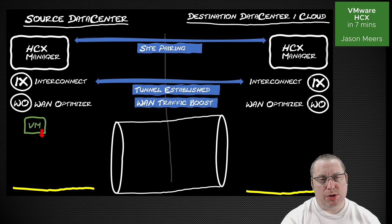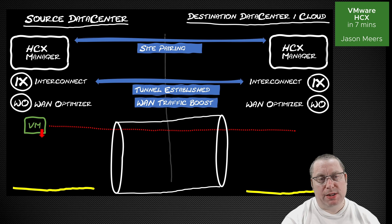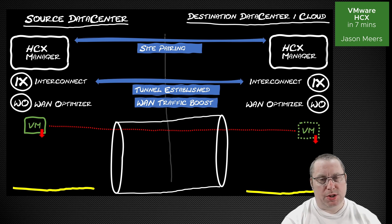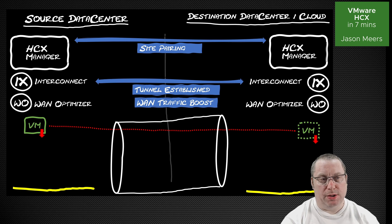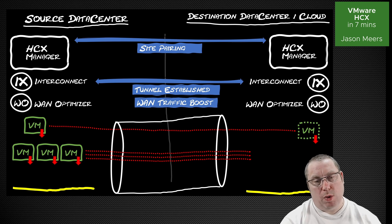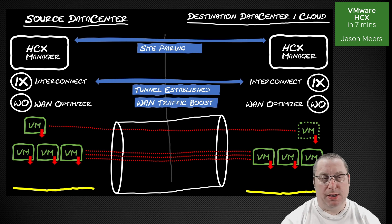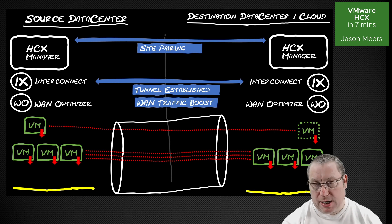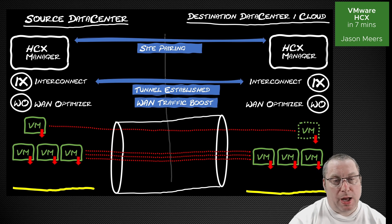Once we've got that tunnel established and an optional WAN optimizer, I've got a virtual machine with a downward arrow indicating it's shut down or stopped. I'm going to migrate that across the tunnel to data center two, or the cloud data center. The red arrows show it's down when I start the migration and down when I finish — that's a cold migration. Another option is a bulk cold migration: here I've got three virtual machines that are powered down, I'm going to migrate them in bulk, and when I finish I have three virtual machines powered down at the other side. It could be maybe even a hundred virtual machines as part of a bulk migration, depending on your connectivity and bandwidth.